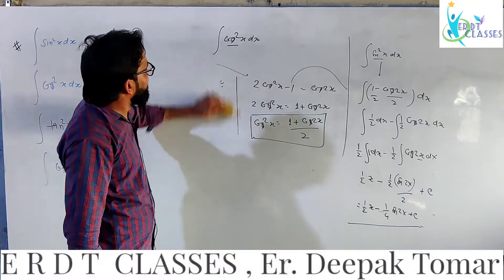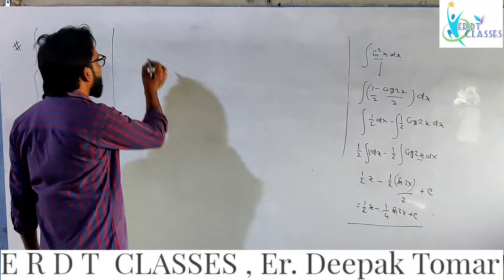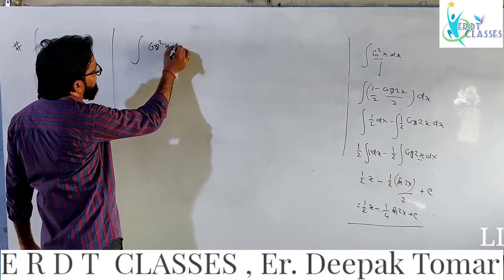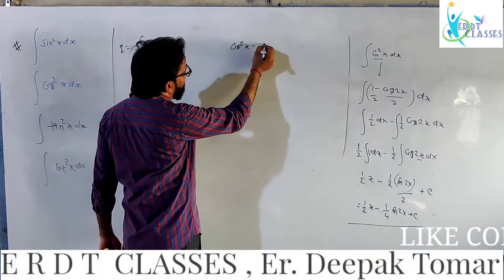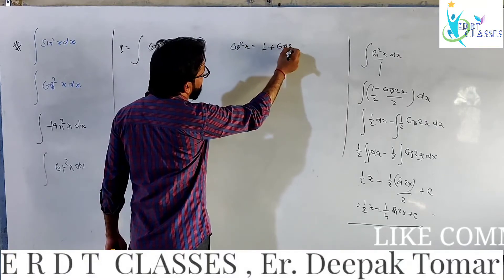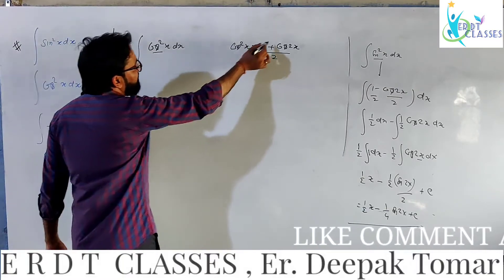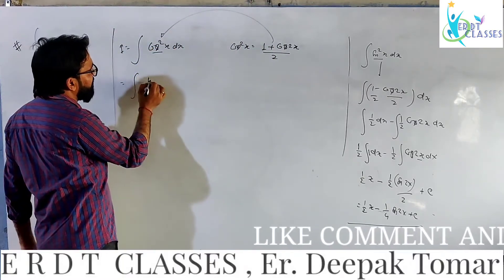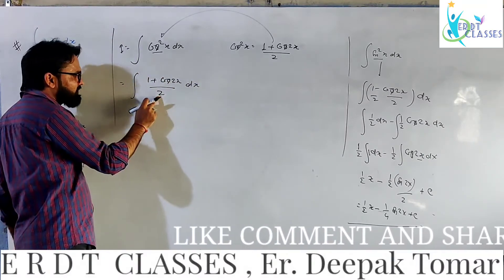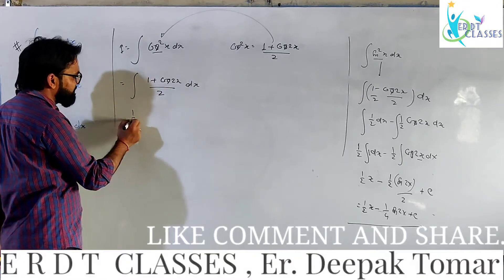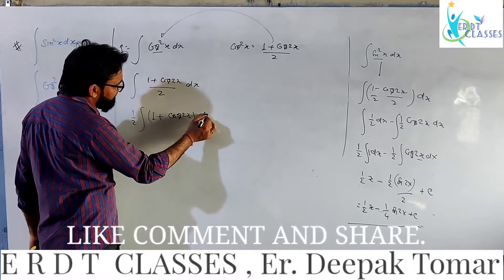Now let's talk about cos square x. The integration of cos square x dx — we can substitute cos square x with (1 plus cos 2x) over 2. So the integral becomes (1/2) times the integral of (1 plus cos 2x) dx, which separates into (1/2) dx plus (1/2) cos 2x dx.